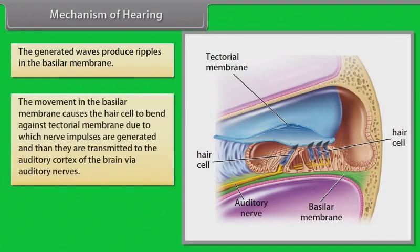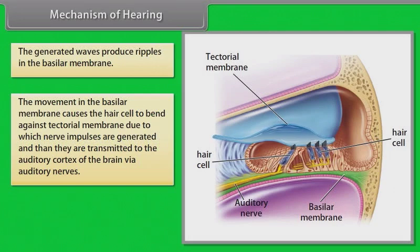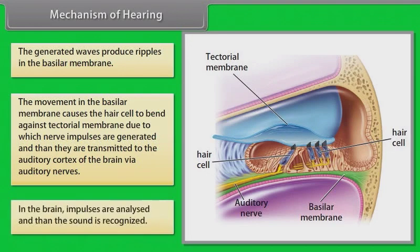The movement in the basilar membrane causes the hair cells to bend against the tectorial membrane, due to which nerve impulses are generated. These impulses are transmitted to the auditory cortex of the brain via auditory nerves. In the brain, impulses are analyzed and the sound is recognized.